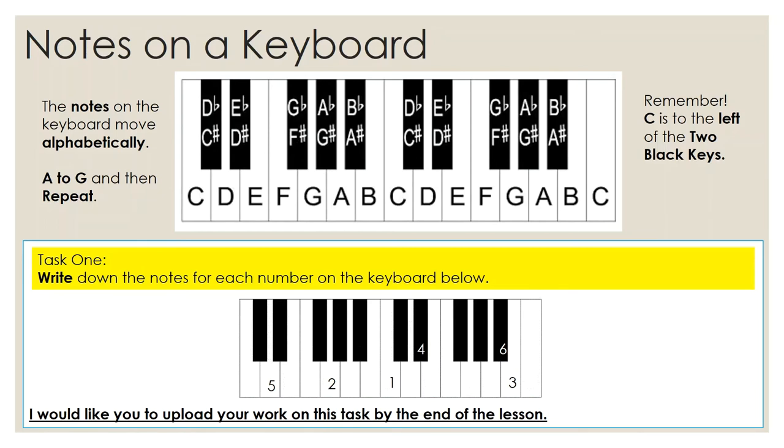Also, when it comes to identifying notes on a keyboard, remember that C is to the left of the two black keys. We always use that phrase to help us work out where notes on a keyboard are. There's two black keys put together and there are three black keys put together. You need to find the two black keys put together and move to the left of those, just to the left. And you'll see that it's the note C.